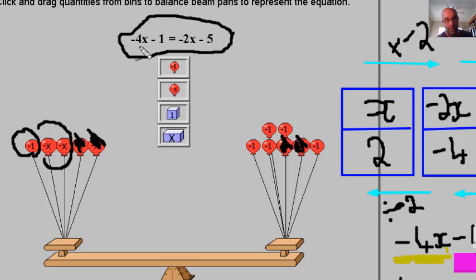Let's test that out. If x is positive two, we've got negative four times two is negative eight. Negative eight minus one is negative nine. On this side, if we have two, on the right side, if we've got negative two times two is negative four. Negative four minus five is also negative nine.